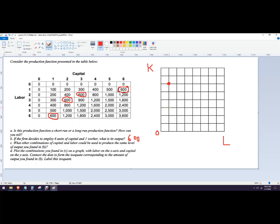Two units of capital and three units of labor. One unit of capital and six units of labor - so one, two, three, four, five, six. It wants us to connect the dots. I'm going to do this with the straight line tool so my shaky hand doesn't mess me up.